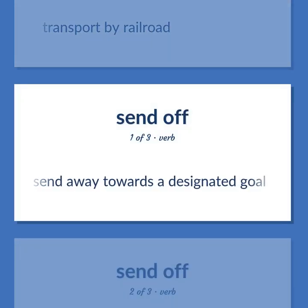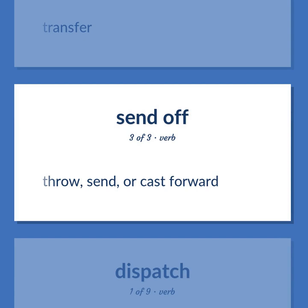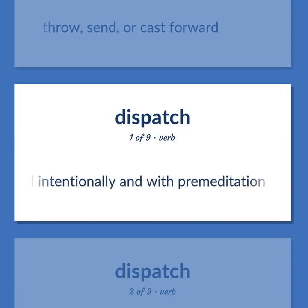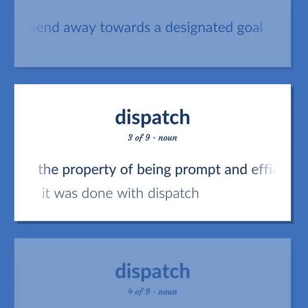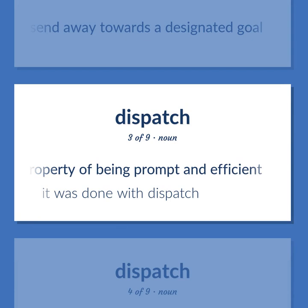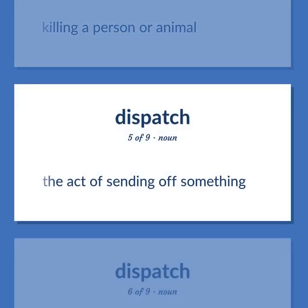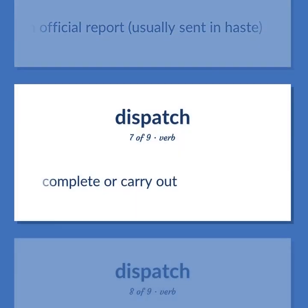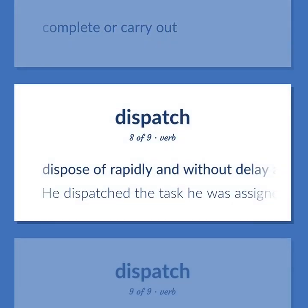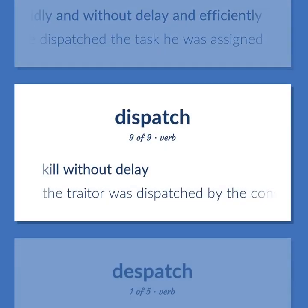Send away towards a designated goal. Transfer. Throw, send, or cast forward. Kill intentionally and with premeditation. Send away towards a designated goal. The property of being prompt and efficient. It was done with dispatch. Killing a person or animal. The act of sending off something. An official report, usually sent in haste. Complete or carry out. Dispose of rapidly and without delay and efficiently. He dispatched the task he was assigned. Kill without delay. The traitor was dispatched by the conspirators.